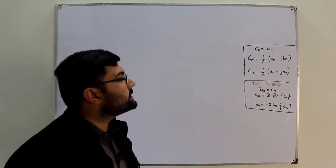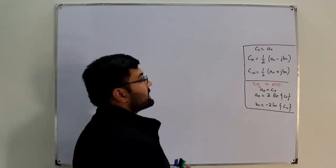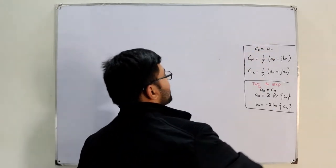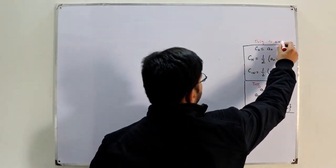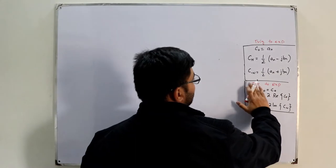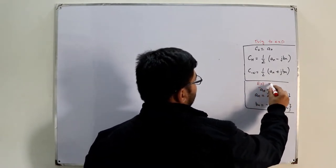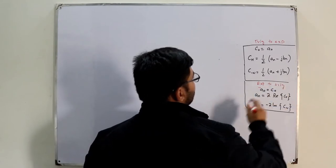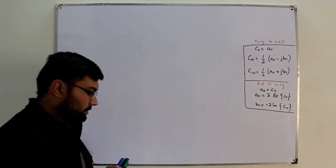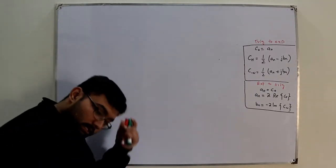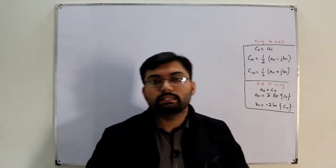From the previous video, the relationship between Fourier coefficients: from exponential to trigonometric and from trigonometric to exponential. I'll try to write that during editing. We may use it in this video, so I've written it here. Now starting the topic of Fourier series — why do we use Fourier series? We know it well from the mathematics point of view: to represent any non-sinusoidal periodic signal in terms of sinusoids.